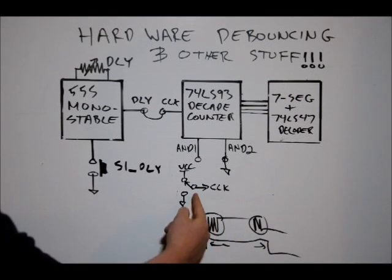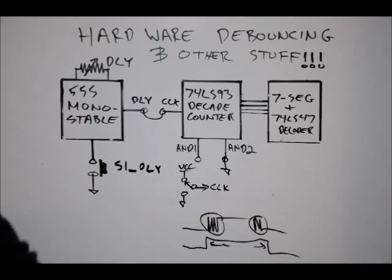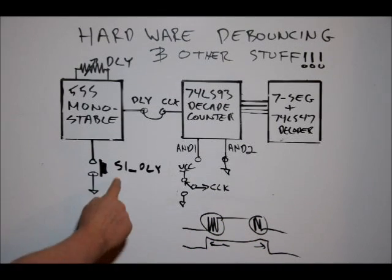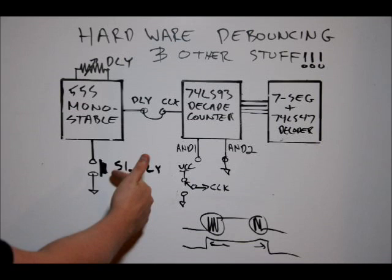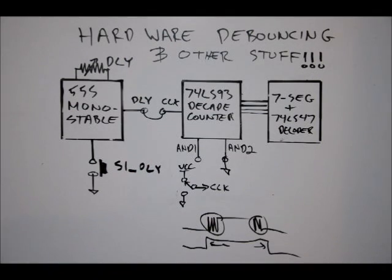And that will act to eliminate the bounce. So we will essentially, for this circuit, we will get bouncing on the rising, bouncing on the falling when we turn the switch off. But for our 555 timer, we use the S1 DLY pin or button, push it, and we'll get a nice, clean, single pulse.